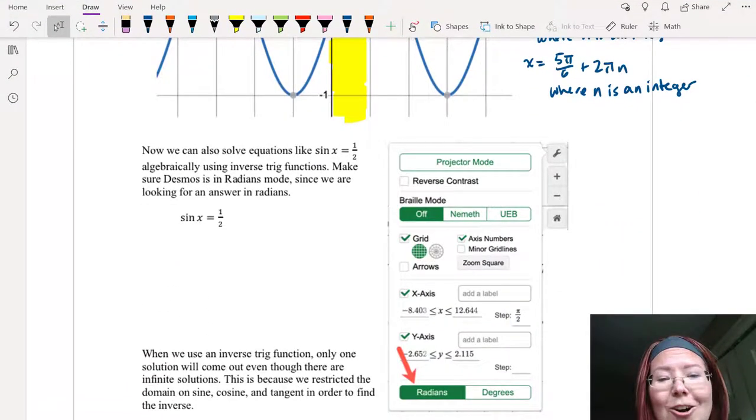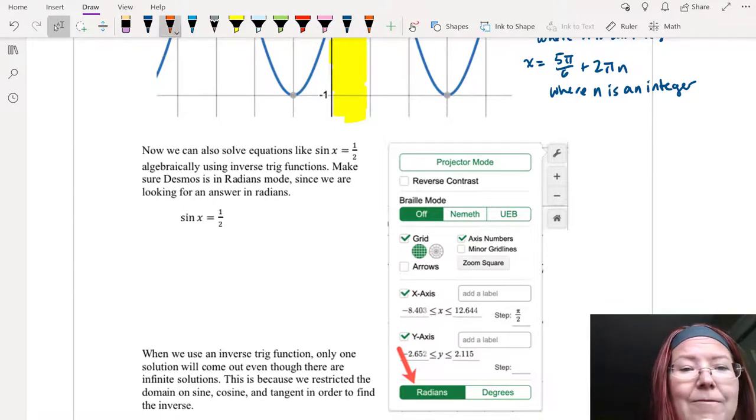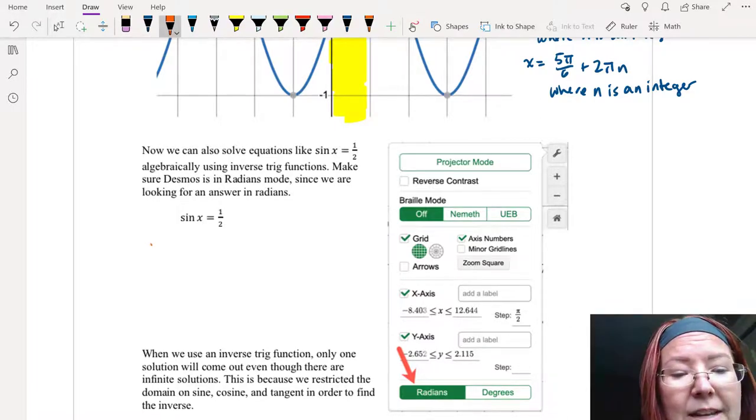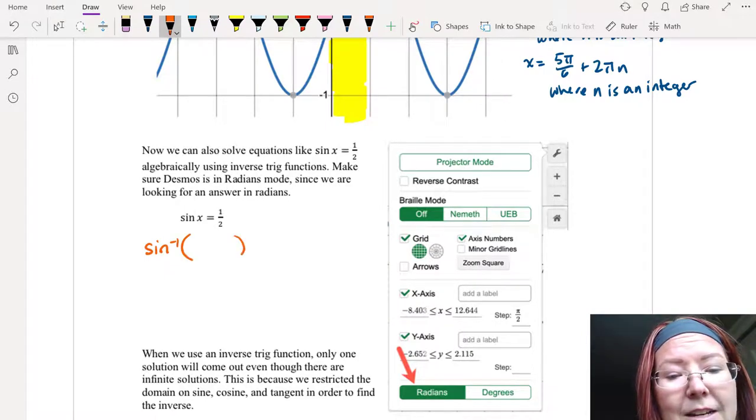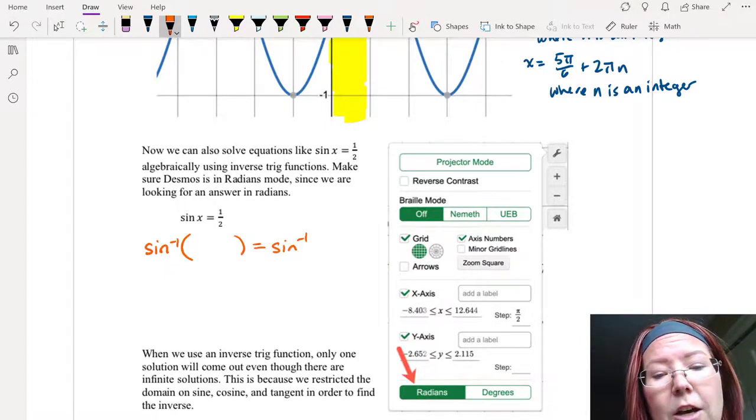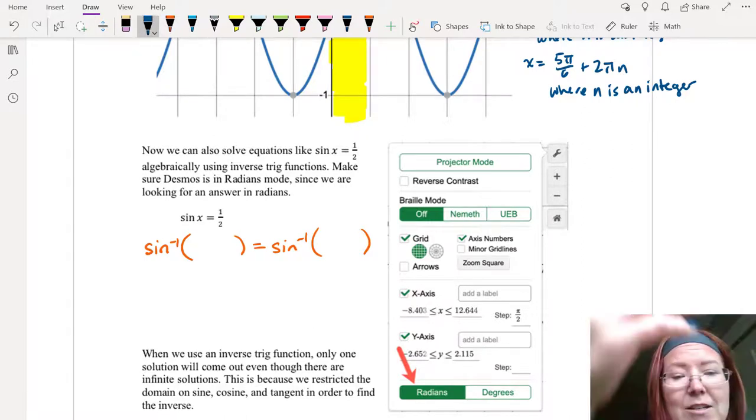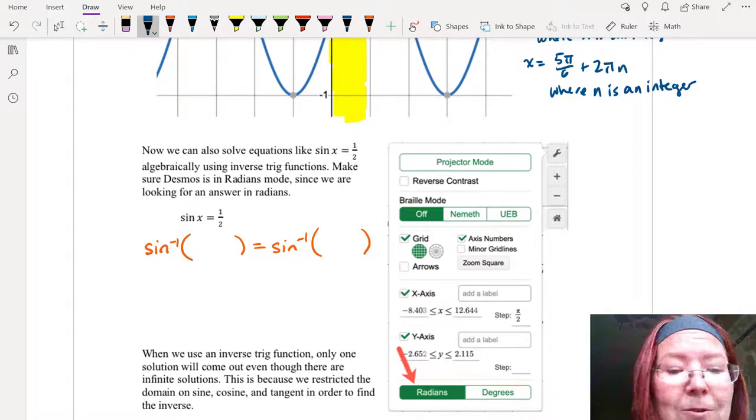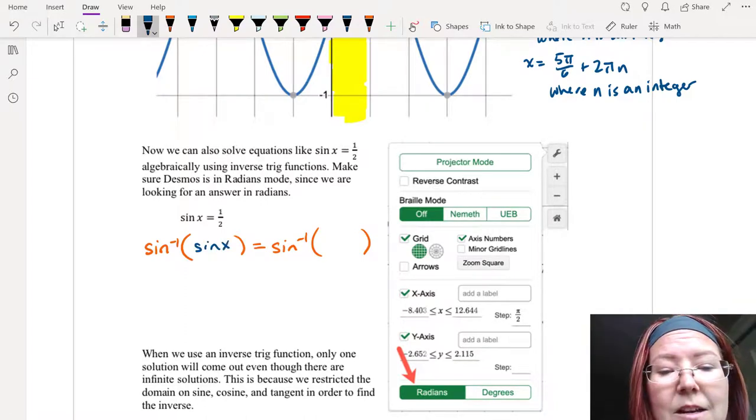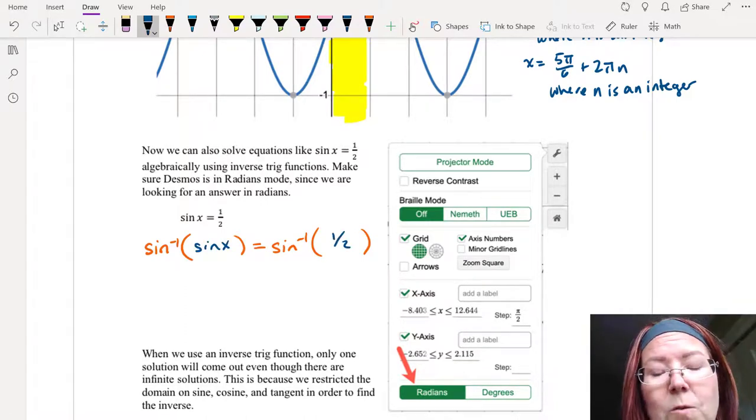Now we can also solve these equations using inverse trig functions. So if we look at an equation like sine x equals 1 half, we could solve this by taking an inverse sine on the left side and an inverse sine on the right side. So I'm going to write inverse sine left parentheses and then leave a space right parentheses on both sides of this, and then I'm just going to drop in the equation.